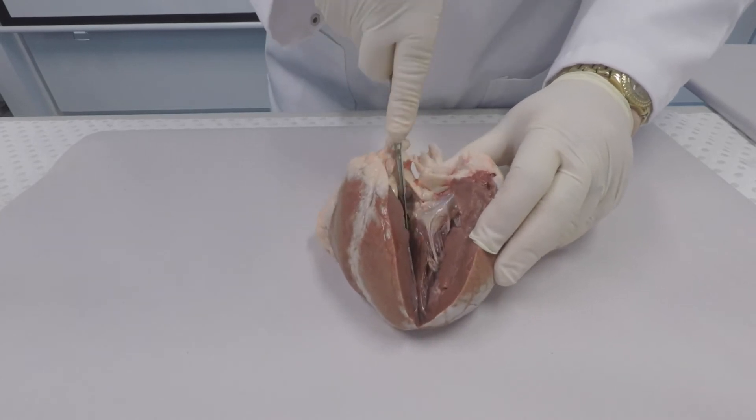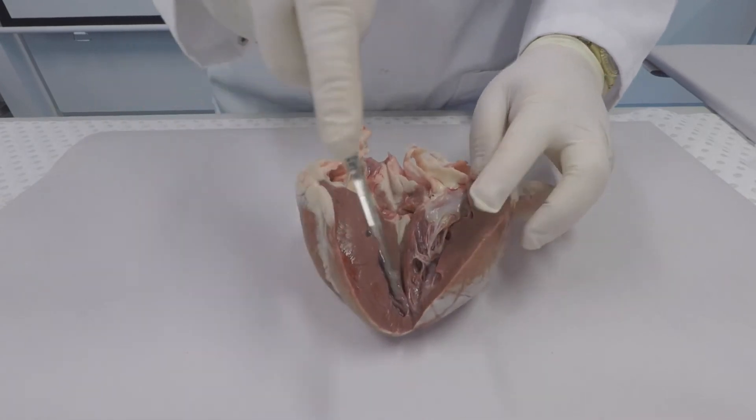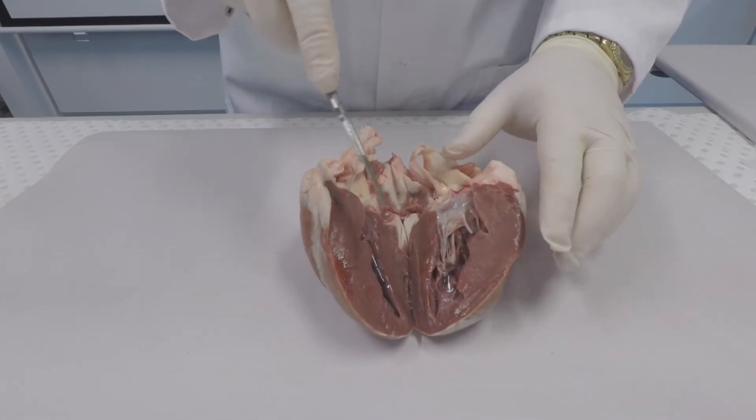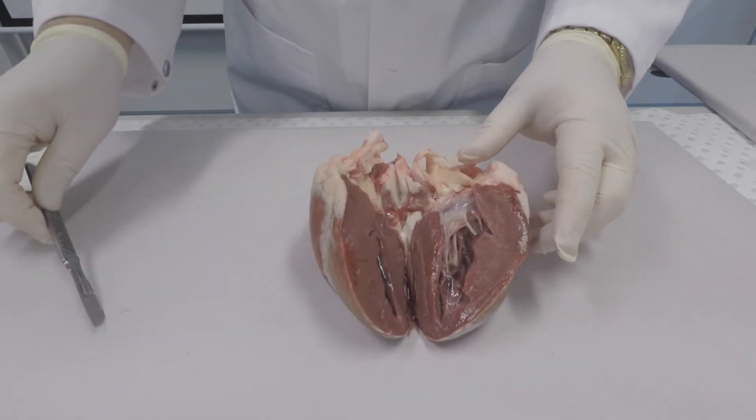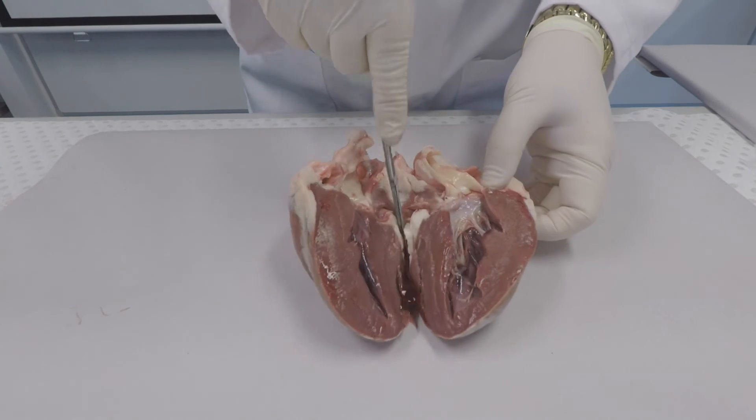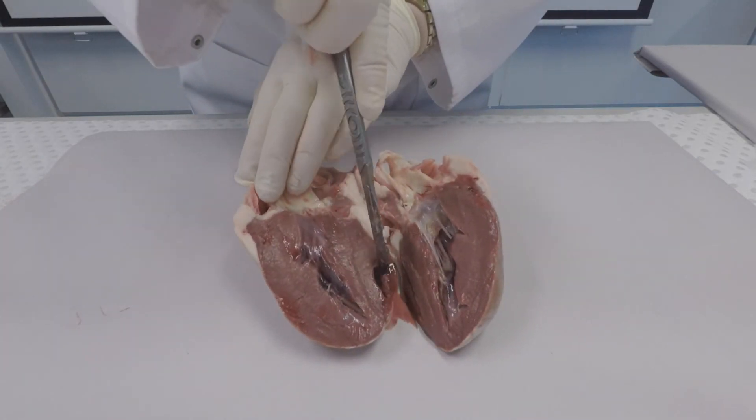Okay, we're dissecting the heart now so we're cutting it in half and you can see it's got thick muscular walls. Remember the heart is a type of muscle; specifically it's made of cardiac muscle which is unique to the heart. Hence the dark color of the muscle tissue.